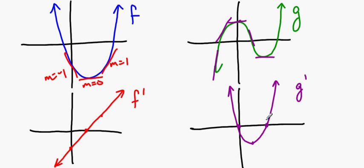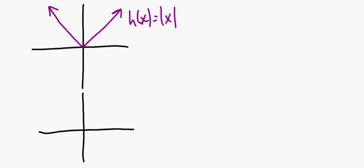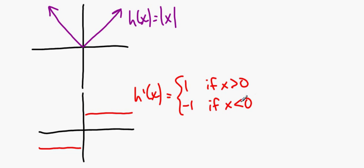But what do you do if your function is like the absolute value function? Well, you want to say that the derivative — the slope all through here is one. Slope is one, slope is one, slope is one. And the slope all through here is negative one. So it's easy to imagine that the slope is one for positive x's and negative one for negative x's.